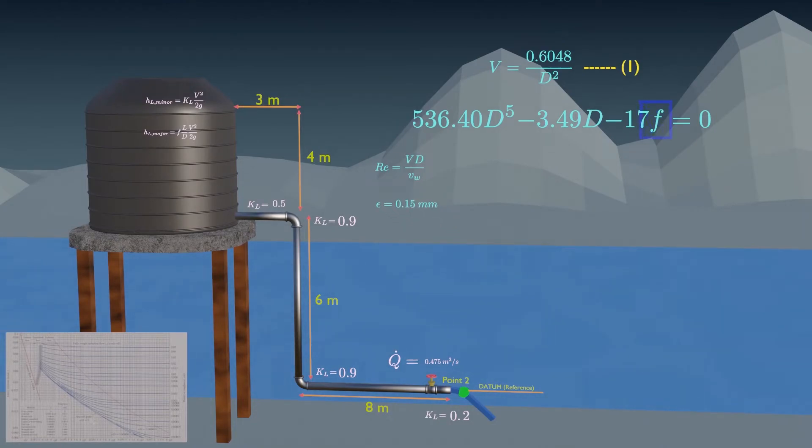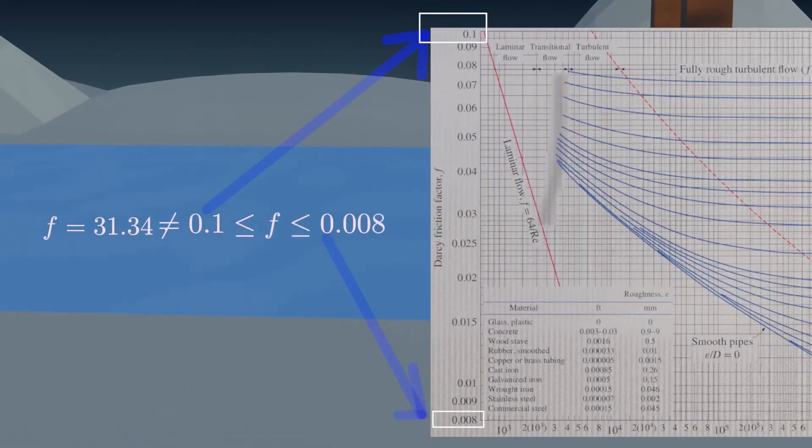To avoid assuming a value of f and then solving this fifth order equation for d, it is easier to assume a value of d first, calculate f, and then verify this result using the Moody diagram. For example, if we assume diameter as 1 meter, we get f as 31.34, which is very huge and does not lie in the range.